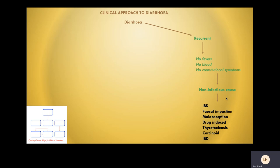We also need to ask specifically about any cause of immunosuppression such as HIV infection, or cancer-related causes post-chemotherapy or post-radiotherapy. Non-infectious causes like inflammatory bowel disease, bowel cancer, and diverticulitis can also present with bloody recurrent diarrhoea.